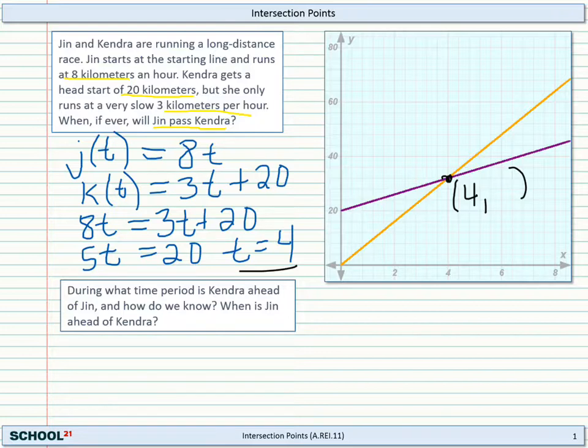Now, the interesting thing here is that we can answer some questions really easily with the graph. During what time period is Kendra ahead of Jin, and how do we know? Well, remember that Kendra is the one who has the head start, and her distance is going to be greater than Jin for this time period here.